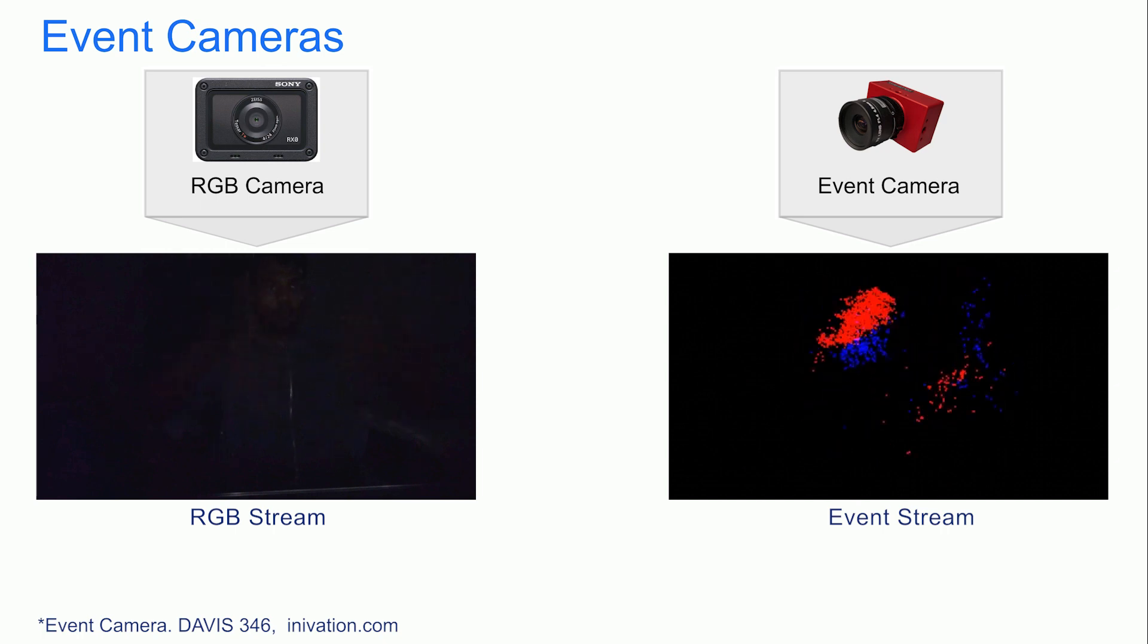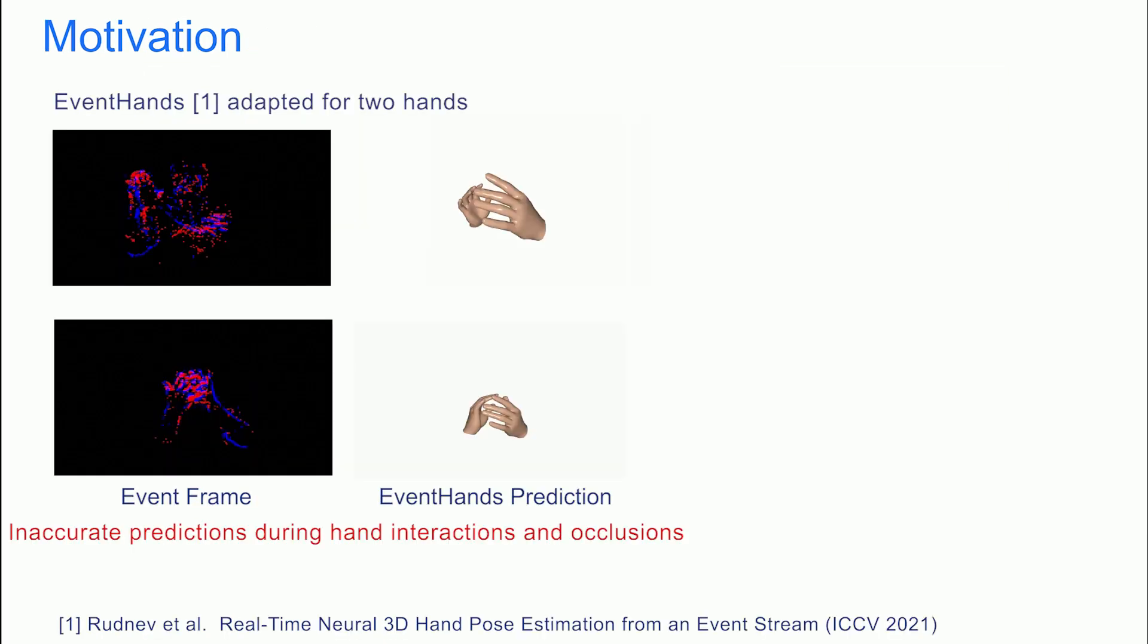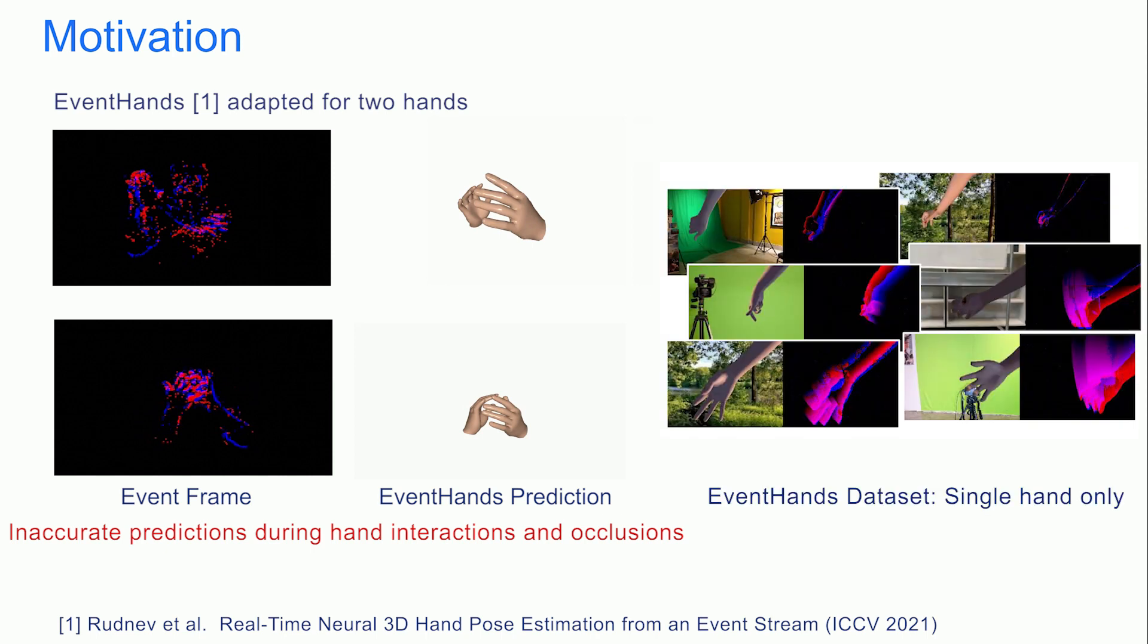For visualization purposes, we represent the event stream as frames by aggregating events over time. The existing methods for 3D reconstruction of a single hand from a single event stream cannot be straightforwardly extended for two hands due to frequent occlusions and hand interactions. In addition, there is no existing dataset of two-hand interactions and event streams which prevents training new data-driven approaches for two-hand pose estimation.